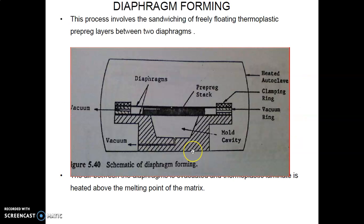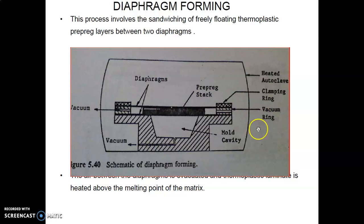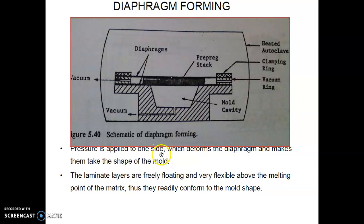Diaphragm forming is a process that involves sandwiching freely floating thermoplastic prepregs — in the form of stacking layers — between two diaphragms. Clamping is used to fix the diaphragms above the mold cavity. The entire process takes place inside a heated autoclave in the upper portion. Pressure is then applied on one side, which deforms the diaphragms and makes the laminate take the shape of the mold. The laminate layers are freely floating and flexible.